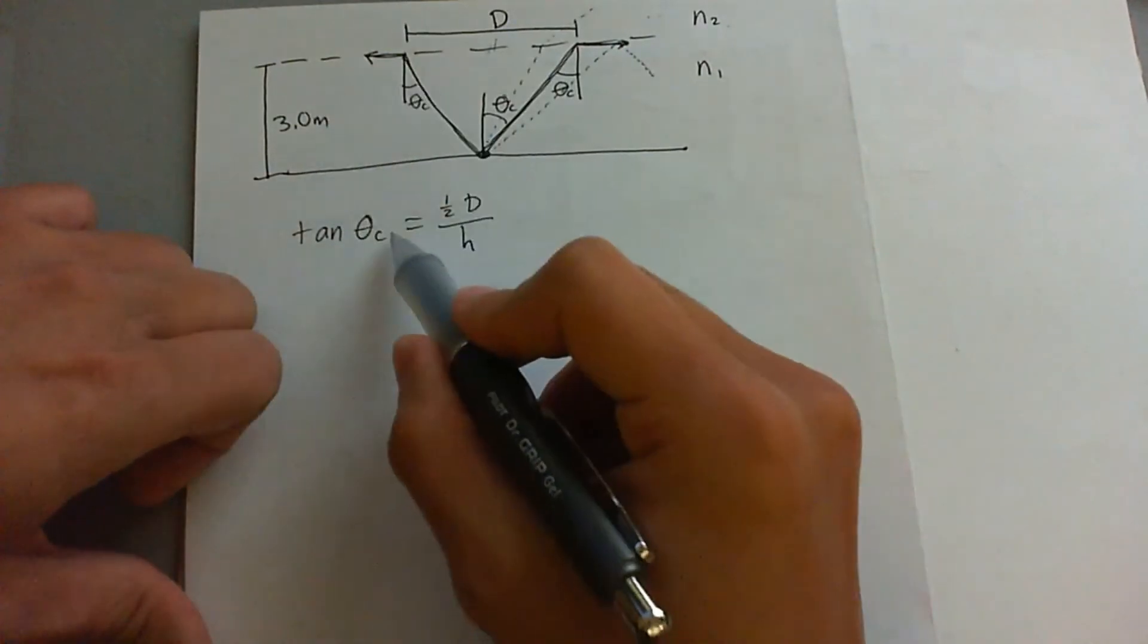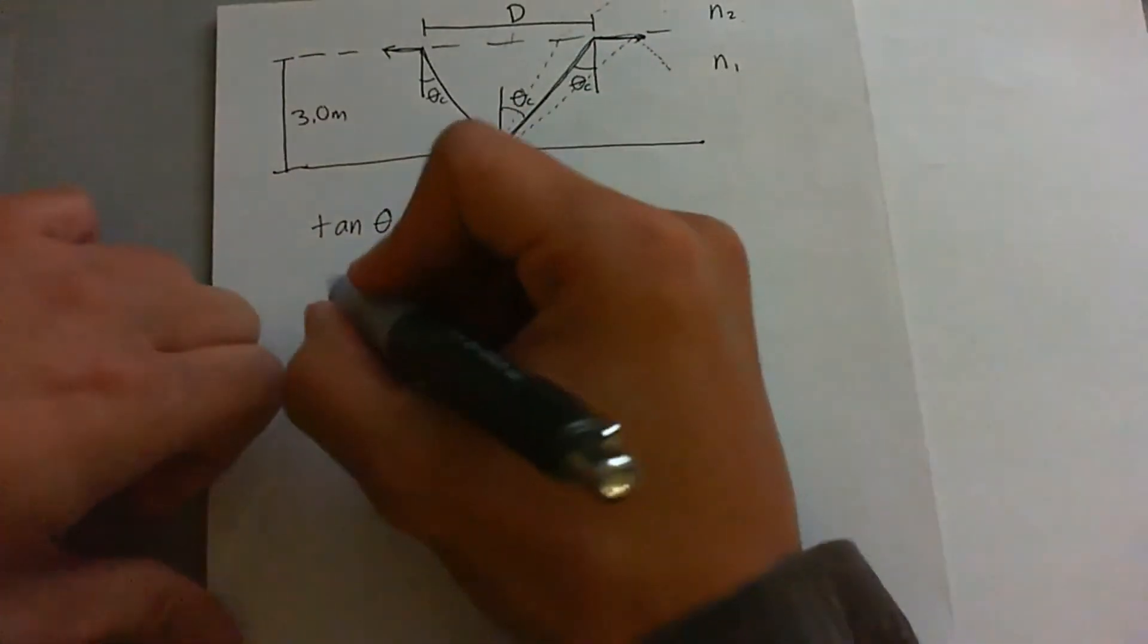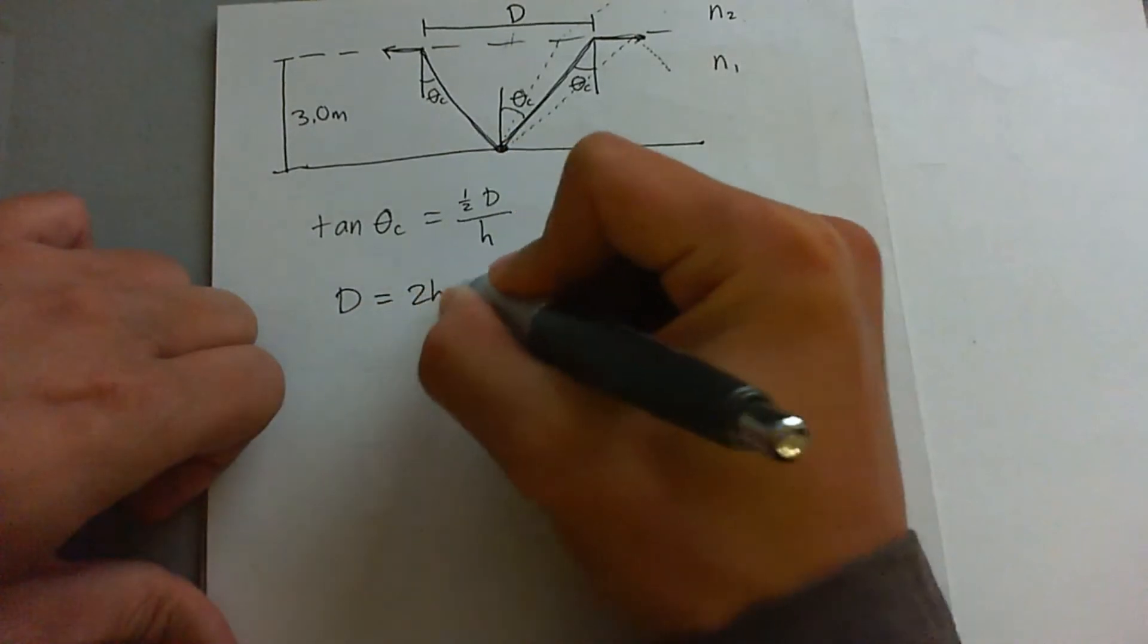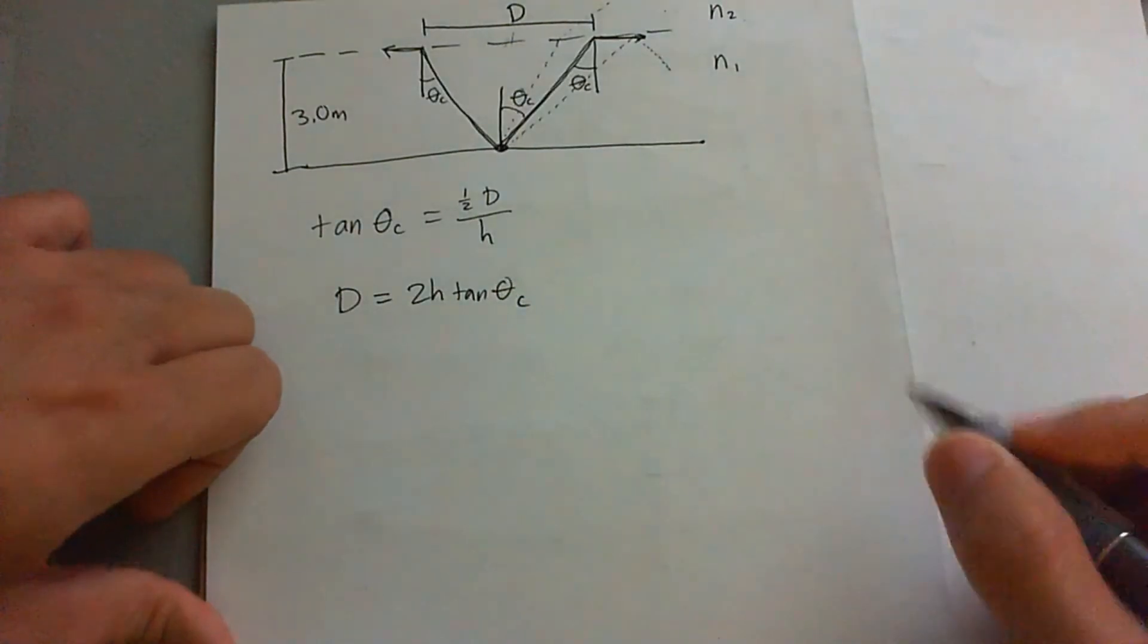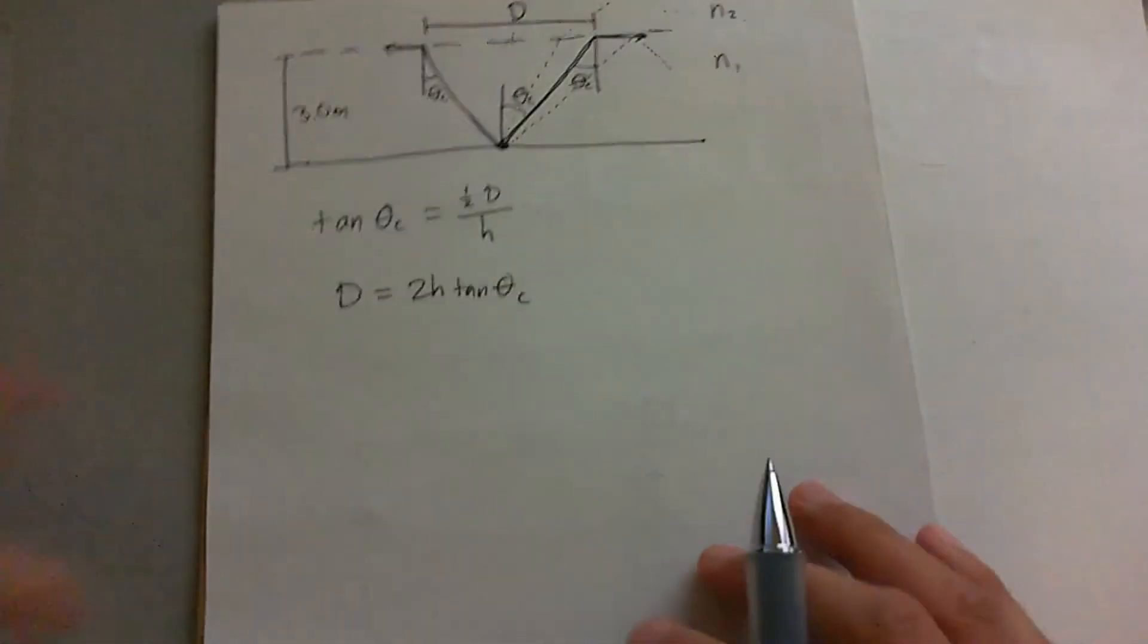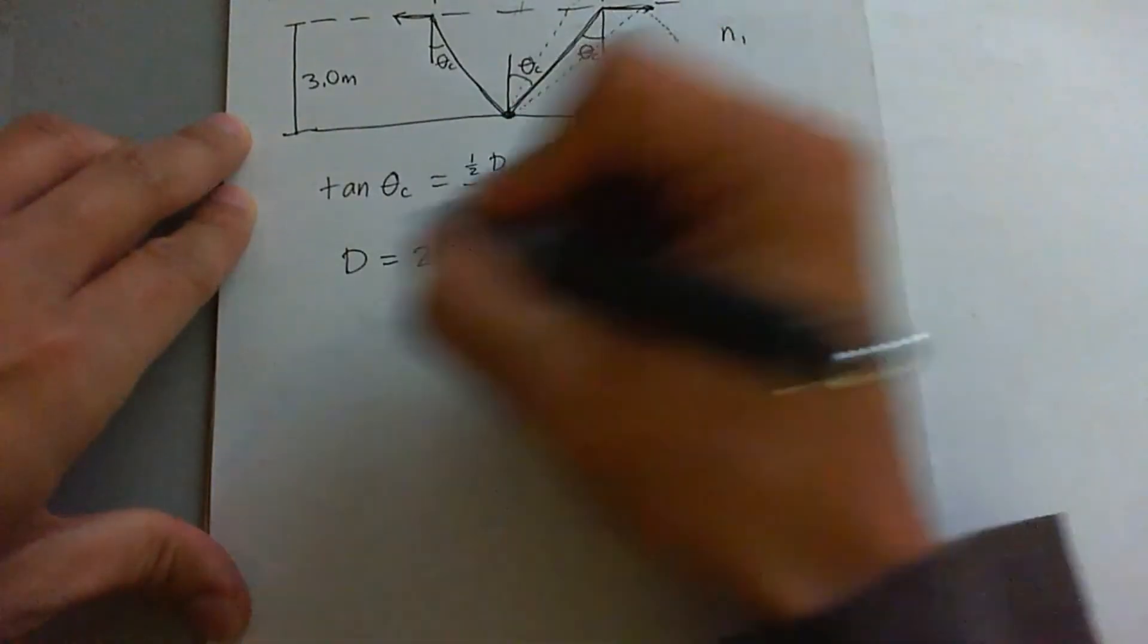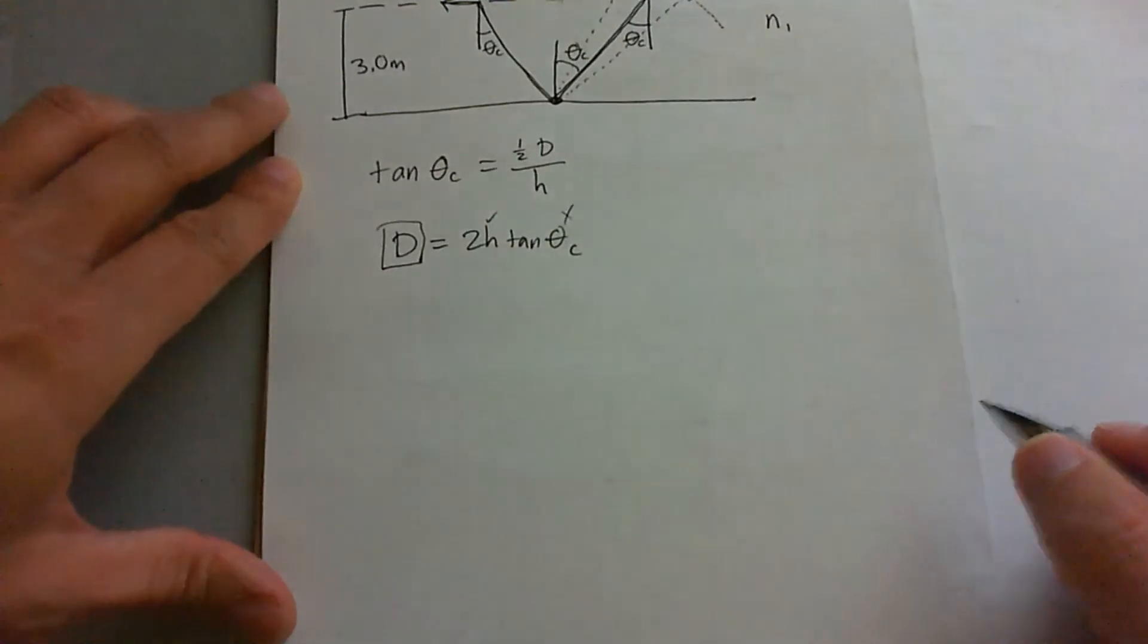and the critical angle, which we will find out on a side quest. So it ends up that D equals 2H tan theta sub C. And now we have our overarching equation. We know what H is. We need to find D. We don't know what this is, so here is the side quest.